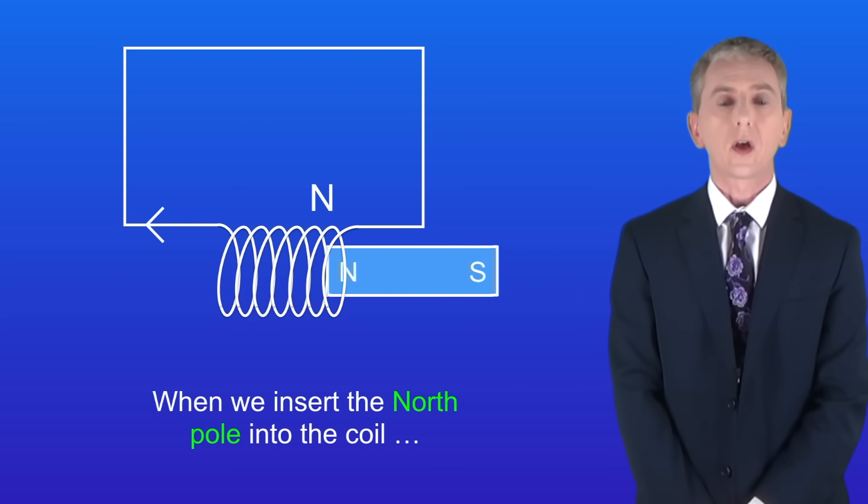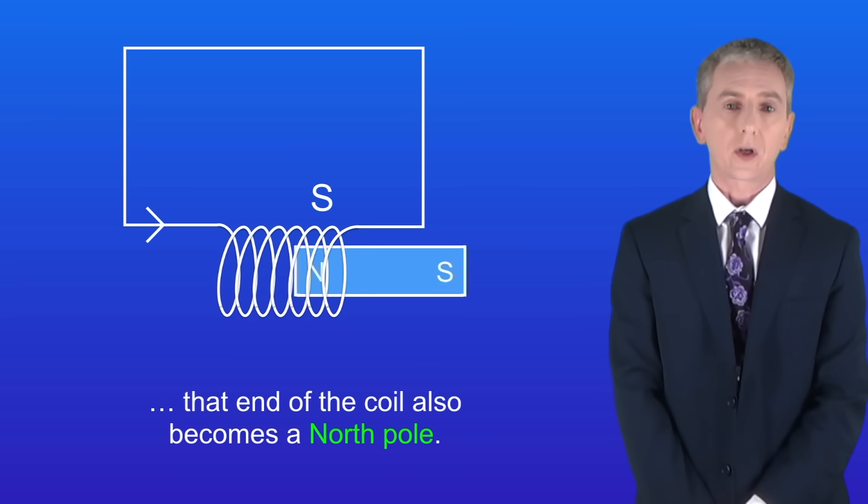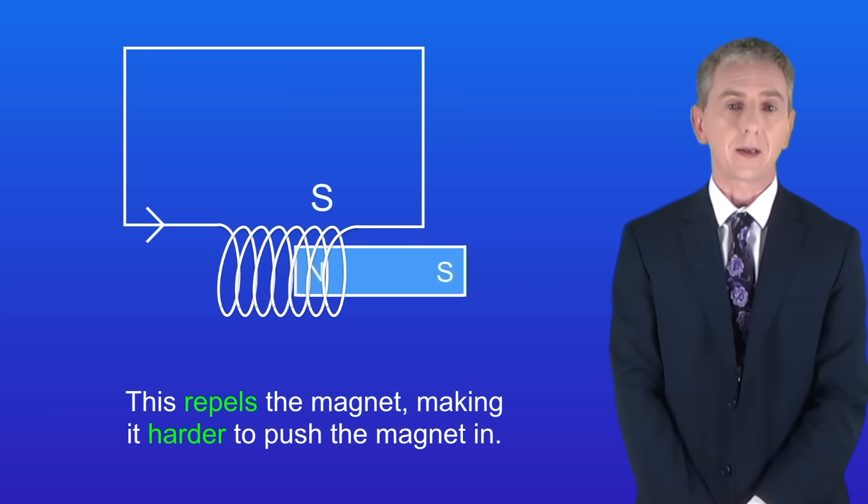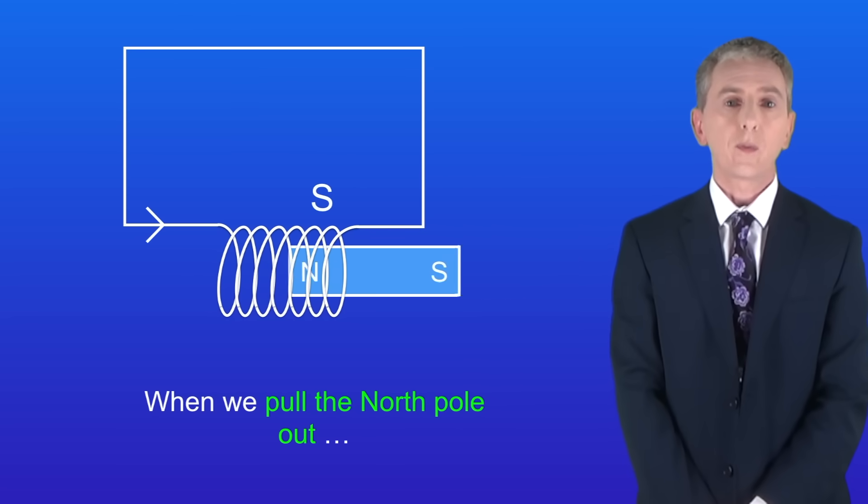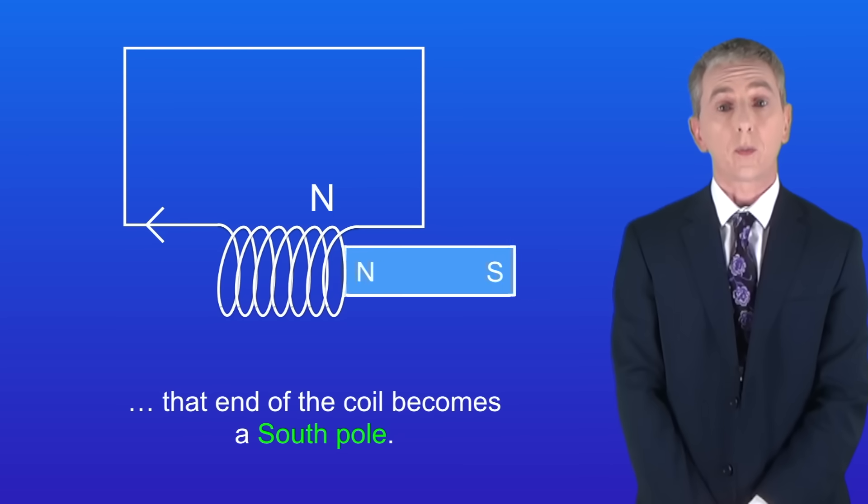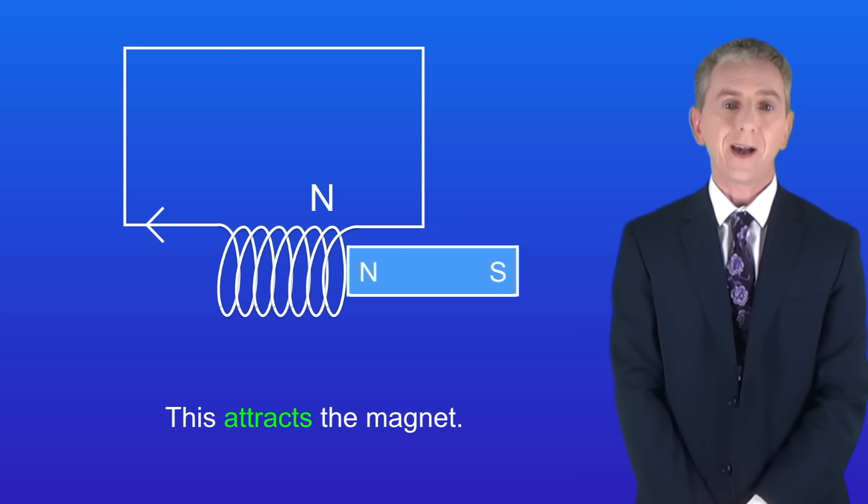So when we insert the north pole into the coil, that end of the coil also becomes a north pole. This repels the magnet, making it harder to push the magnet in. And when we pull the north pole out, that end of the coil becomes a south pole. This attracts the magnet, making it harder to pull it out.